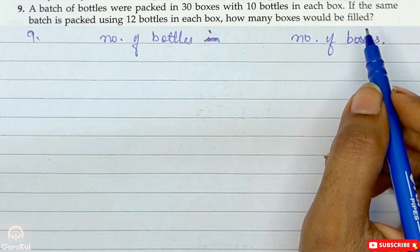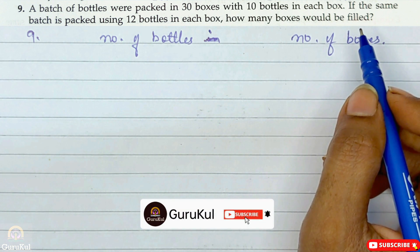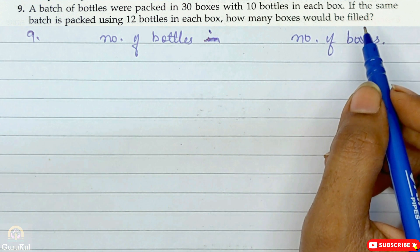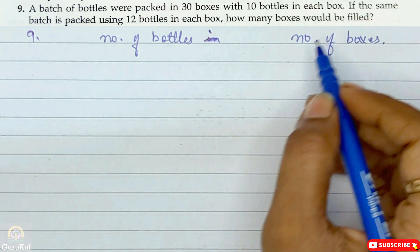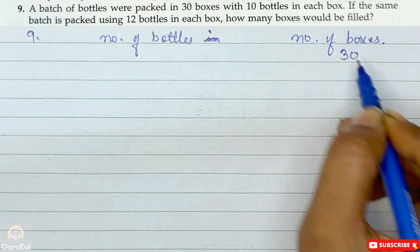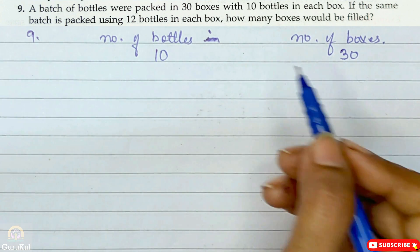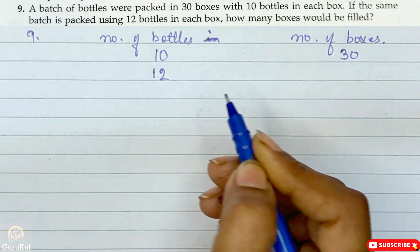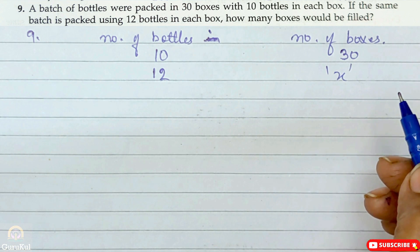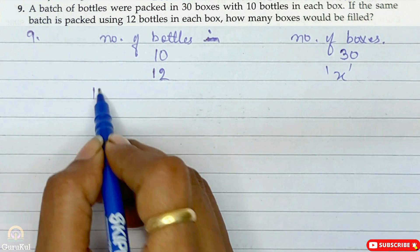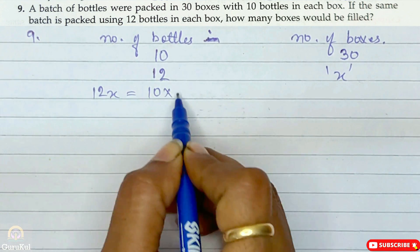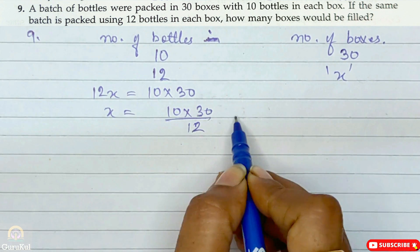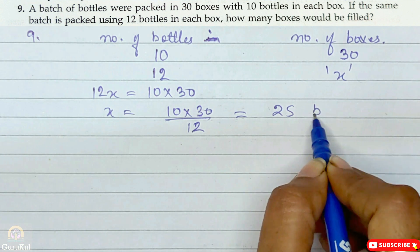Question number 9: A batch of bottles were packed in 30 boxes with 10 bottles in each box. If the same batch is packed using 12 bottles in each box, how many boxes would be needed? So 12x = 10 × 30, giving x = 300 ÷ 12, and the answer is 25 boxes.